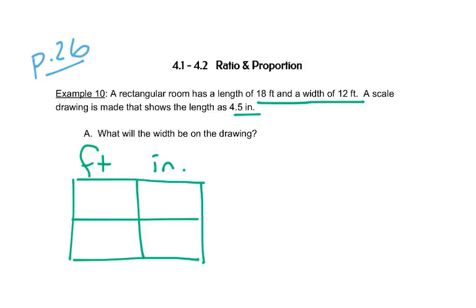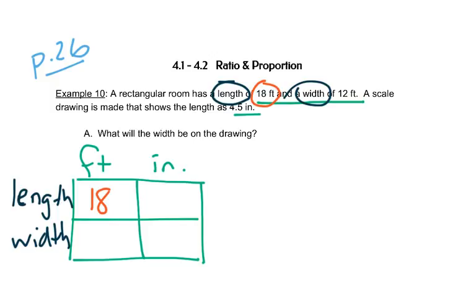The next thing we should notice is that we have length and width. So we're going to use that as the side of our box. We have a length of 18 feet for our room, so that will go here. And a width of 12 feet for the room.